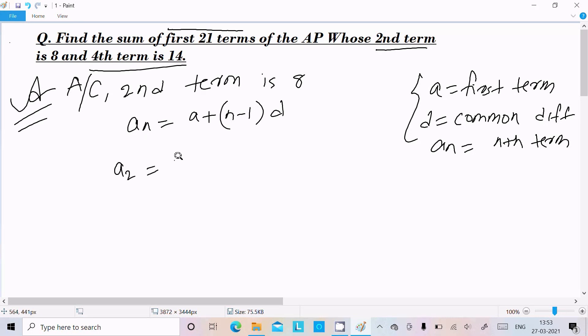So a_2 = a + (2-1)d. Since a_2 = 8, we have 8 = a + d. Suppose this is equation 1.